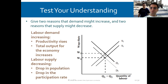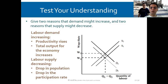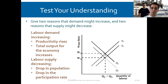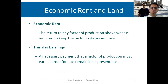Reasons that labor demand might increase: when productivity raises, total output for the economy increases, costs get lower, profits rise, and so there is more demand for employees — this shifts demand from D1 to D2. Reasons that labor supply might decrease include a drop in population and a drop in the participation rate — people no longer wanting to work.